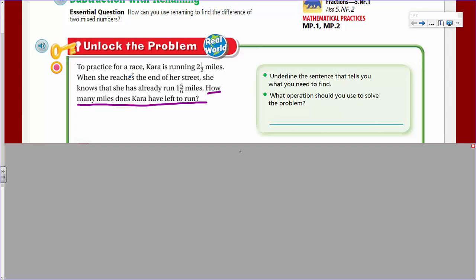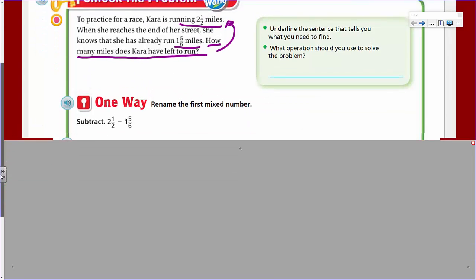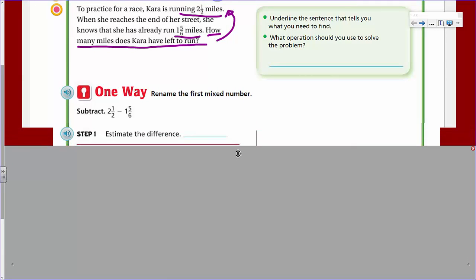Next, it says, what operations should you use to solve the problem? Well, when you look at that, it says that to practice for this race, that she's running this distance here. When she reaches the end of her street, she knows that she has that distance covered. It basically is how many miles does Kara have left to run. I would rephrase that question a little bit, make it a little bit more clear. But then, this is the distance that she runs when she gets to the end of her street.